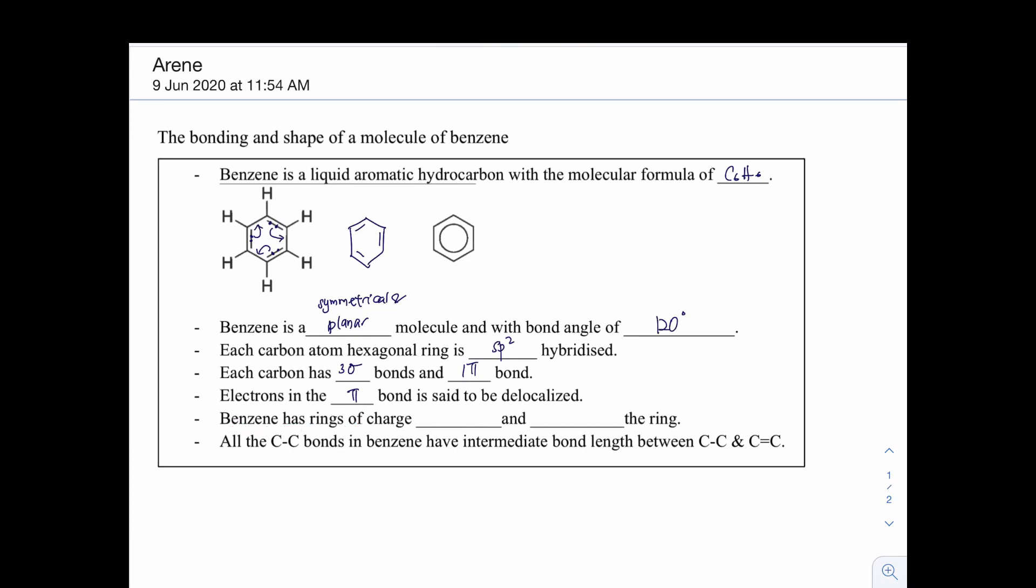And benzene has a ring of charge above and below the ring. So why is that so? Because if you look at one structure of benzene ring, each carbon here has one p-orbital. Now, do you remember in AS, when p-orbital overlaps with p-orbital, it will form the ring of charge above and below. So this is the electron cloud. When this p-orbital overlaps, it will form an electron cloud above the ring and also below the ring.